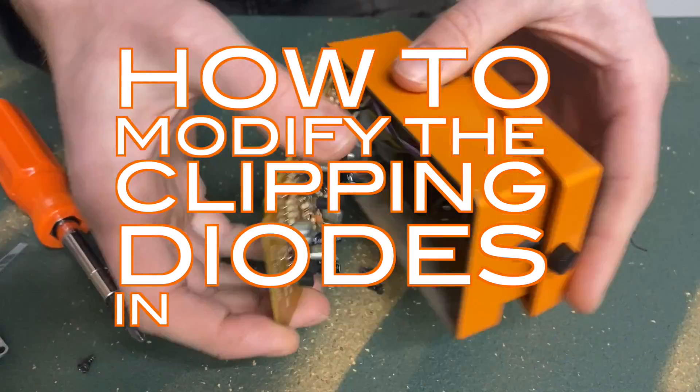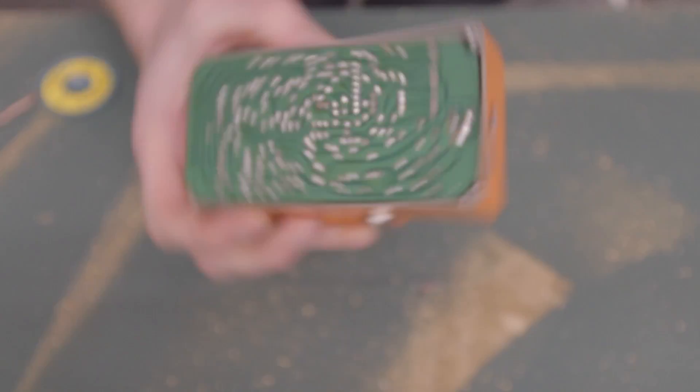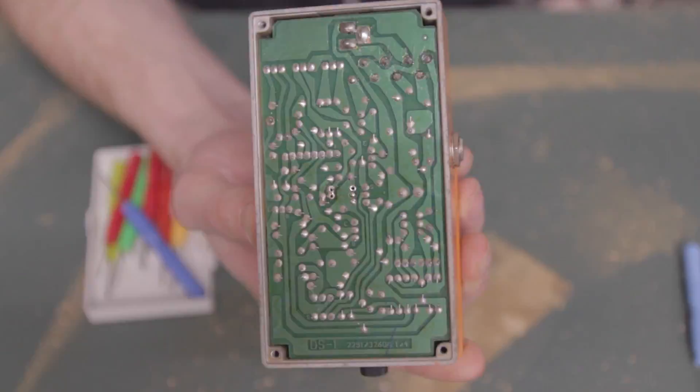How to modify the clipping diodes in your Boss DS-1. Let's swap out the stock clipping diodes on a DS-1 to change the tone and character of the distortion.